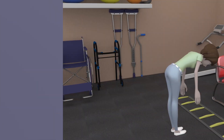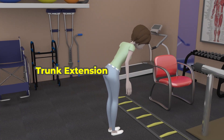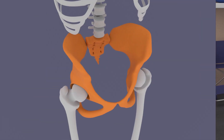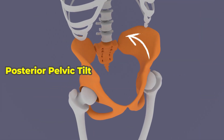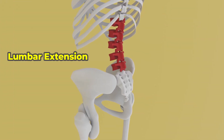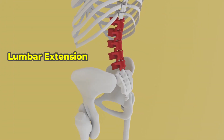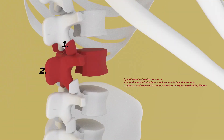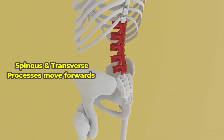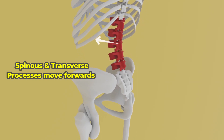Coming back to the erect posture results in posterior pelvic tilt first, followed by lumbar extension, where each lumbar superior and inferior facets move superiorly and anteriorly. This results in the spinous and transverse processes moving forwards.